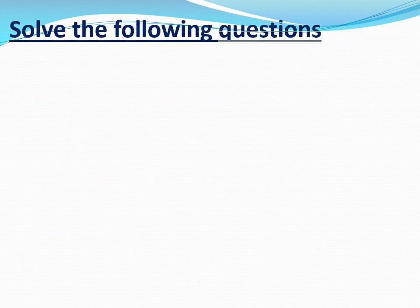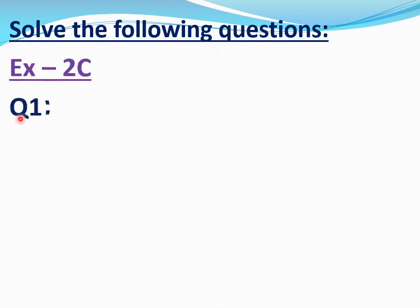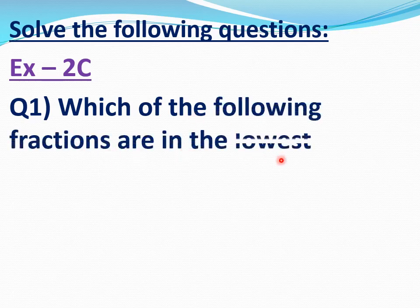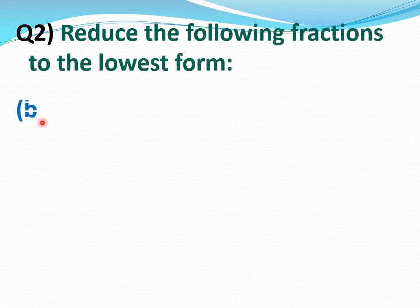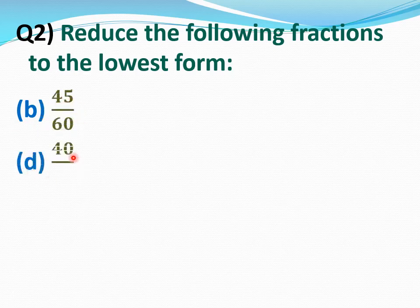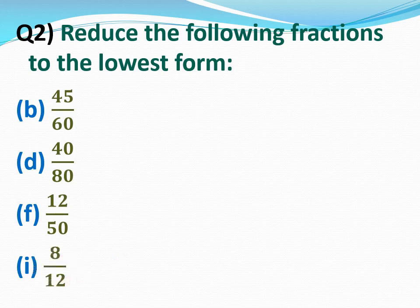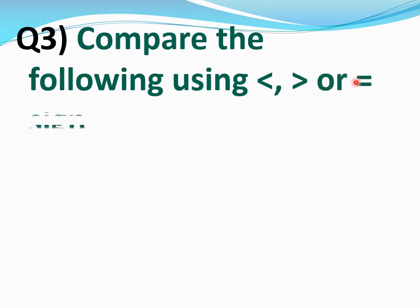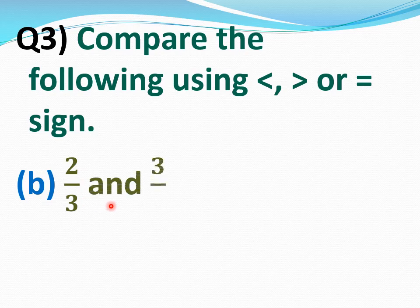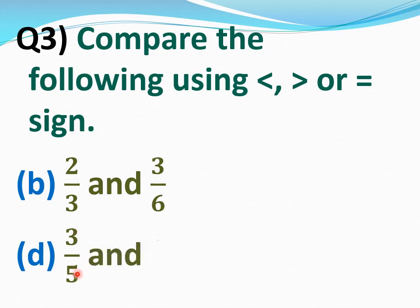Now solve the following questions assigned as homework. Exercise 2C, question number 1: which of the following fractions are in the lowest form? B part 2 by 6, D part 1 by 2. Question number 2: reduce the following fractions to the lowest form. B part 45 by 60, D part 40 by 80, F part 12 by 50, I part 8 by 12. Question number 3: compare the following using less than, greater than, or equal sign. B part 2 by 3 and 3 by 6, D part 3 by 5 and 7 by 8.